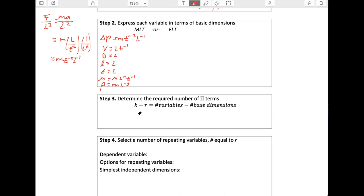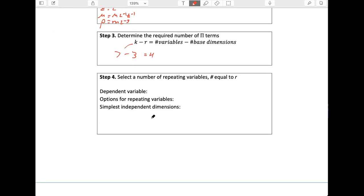So next step, we're going to count the number of required terms. We've got one, two, three, four, five, six, seven variables. We're used mass length and time. So that's three base dimensions. And so we're going to need a total of four pi terms.